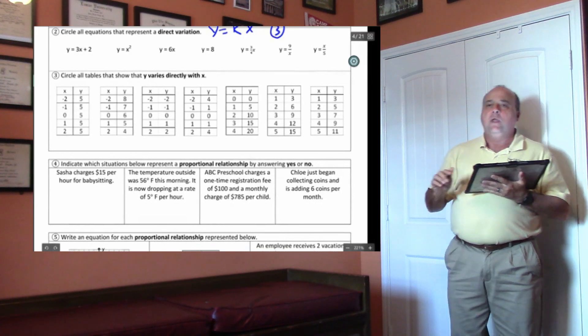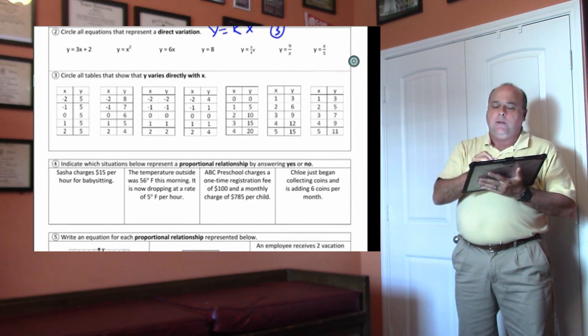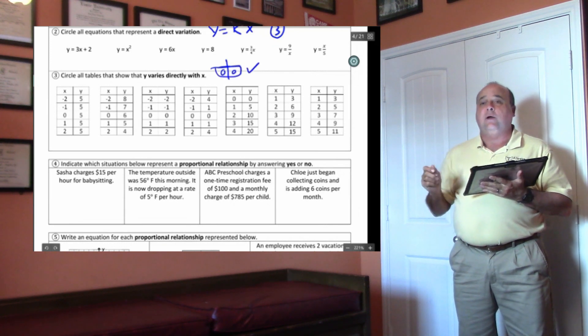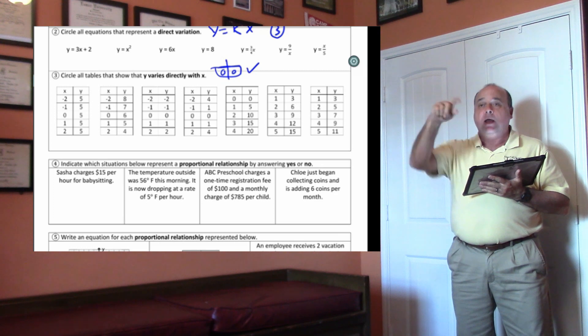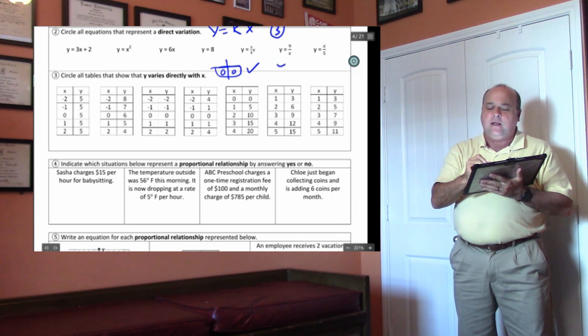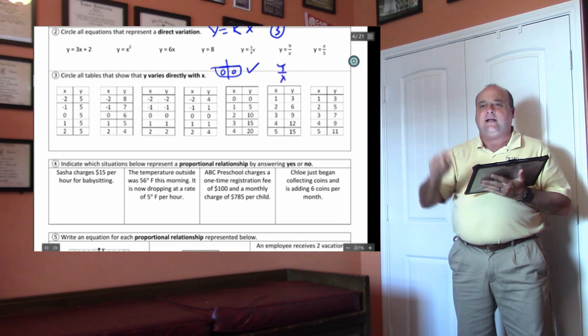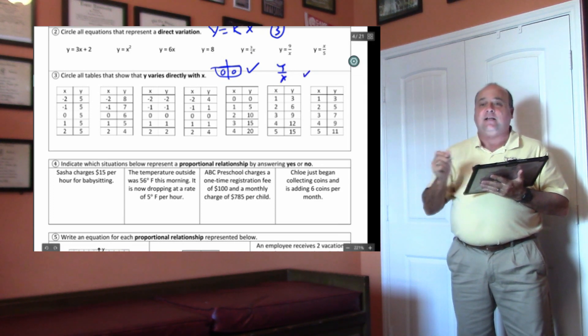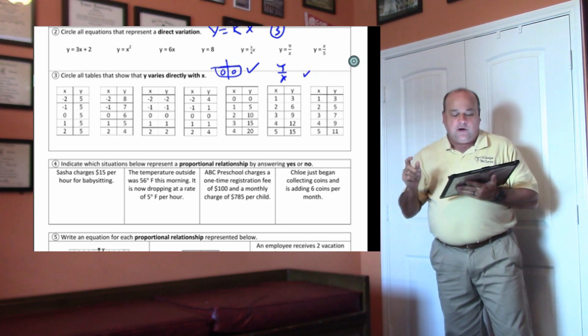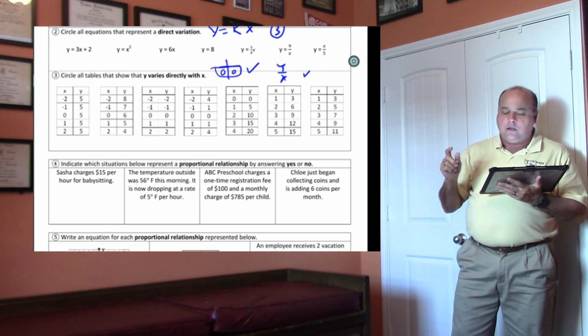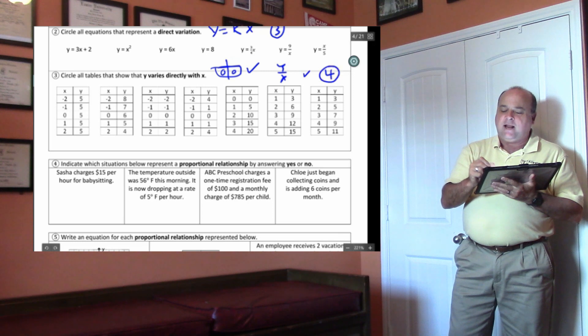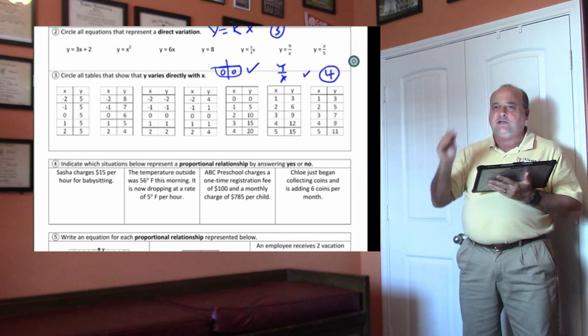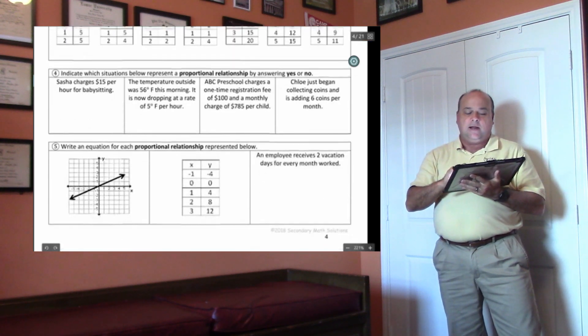Number three. On number three, to figure this out, remember, if the table has zero, zero, ding, ding, ding, it has direct variation because it goes to the origin. If the table doesn't have that, then you have to do y over x. Keep dividing by y over x. If those are the same, then it has direct variation, doesn't it? There are one, two, three, four of them that have direct variation. So four of those tables have direct variation. I'm not going to tell you which ones. Keep going down.